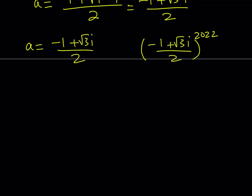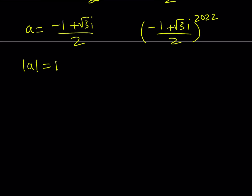And now we're going to use what's called De Moivre's formula. I know I'm not pronouncing it correctly the French way, but that's what it is. So let's go ahead and evaluate a to the power of 2022 from here. In order to do that, I'm going to check the modulus — the absolute value of this complex number. It is going to be 1, which is nice, because when we raise it to a power we're not going to have to worry about the modulus. So let's go ahead and write this in polar form.